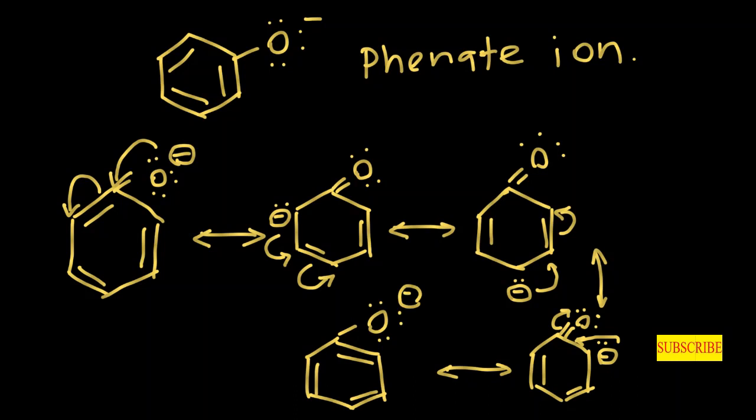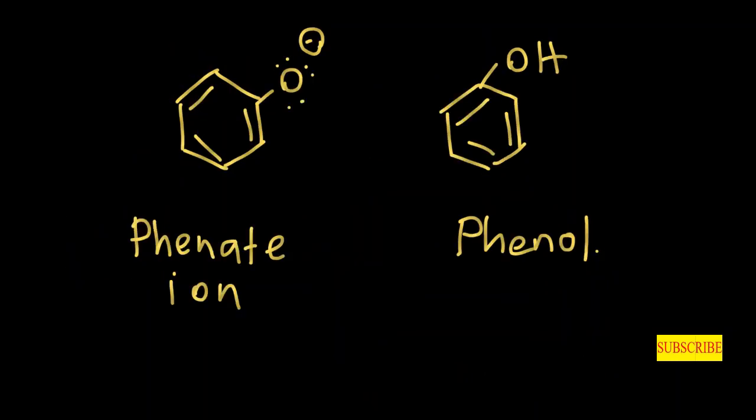According to the resonance structures, you can see there are about four to five resonance structures in phenate ion, but when we consider phenol there is only one stable structure. Phenate ion has five resonance structures and phenol has one. When the number of resonance structures of a molecule is higher, that molecule is more stable. So phenate ion is more stable than phenol.